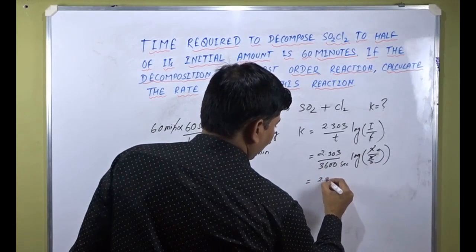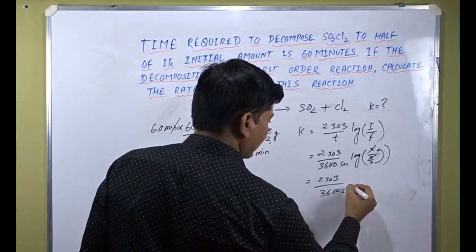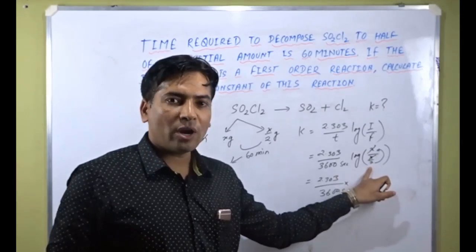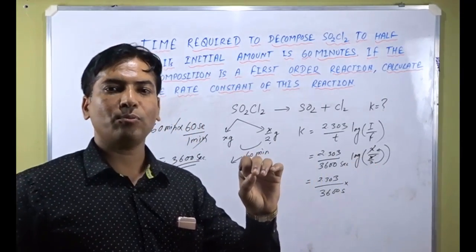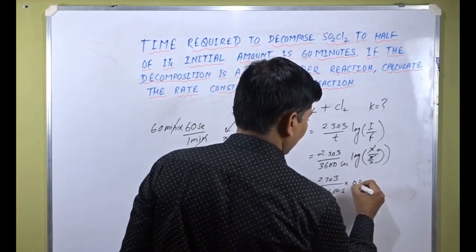So 2.303 divided by 3600 seconds multiplied by log 2. The value of log 2 is 0.3010. We can plug in this value, 0.3010.